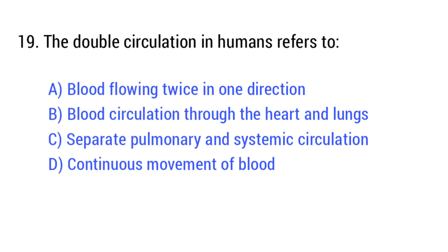Question number 19. The double circulation in humans refers to? The right answer is option C: Separate pulmonary and systemic circulation.